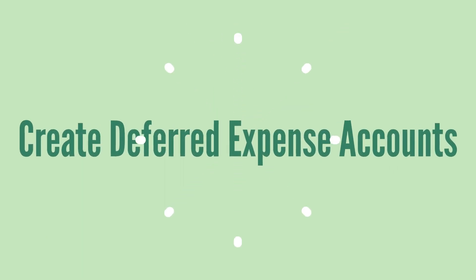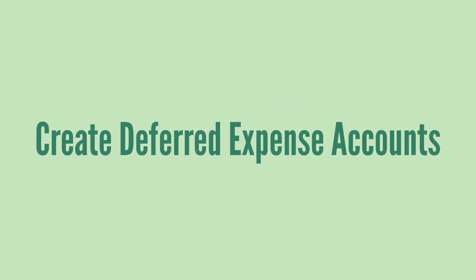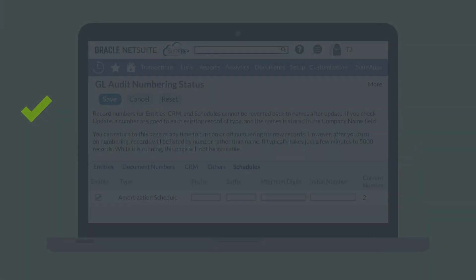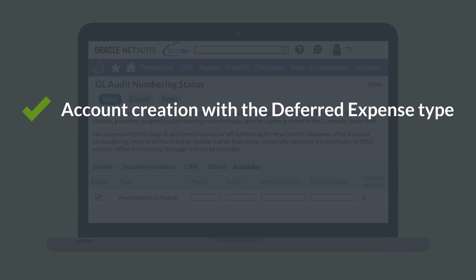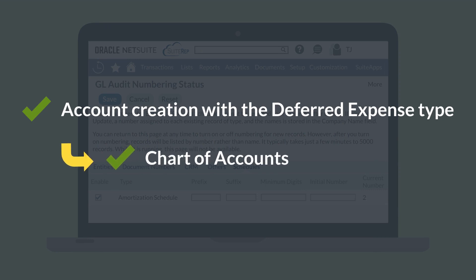After the amortization feature has been turned on, the system will automatically create an account with the Deferred Expense type and add it to the chart of accounts. This account will be where deferred expenses are posted until an amortization journal entry moves them to an expense account. If you need any deferred expense accounts in addition to the default account, you will need to create those.